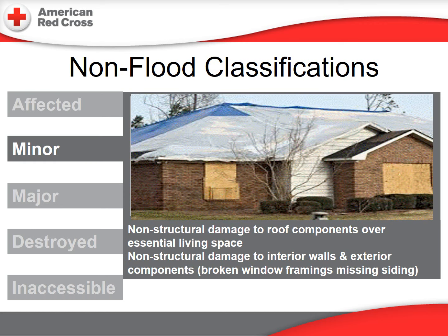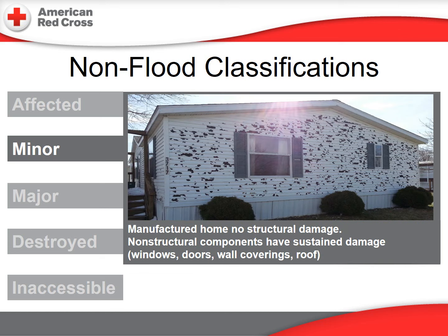The home shown here will probably be classified as minor damage. What you'll notice is non-structural damage to the roof components over an essential living space. Non-structural damage to interior walls and exterior components is also included in this category, including broken window framings and missing siding. This manufactured home has suffered minor damage only — there is no structural damage apparent, and non-structural components such as siding, windows, doors, and wall coverings may have been affected.